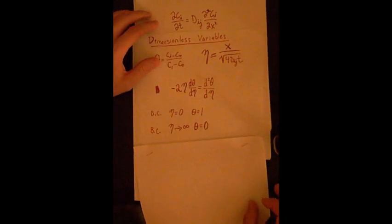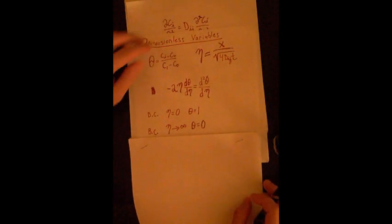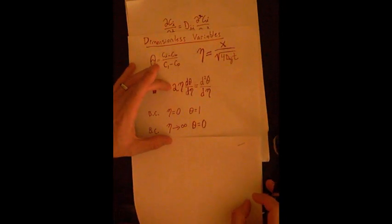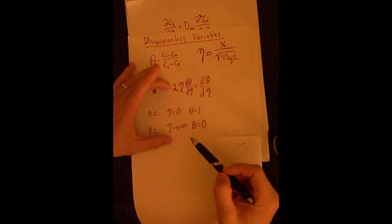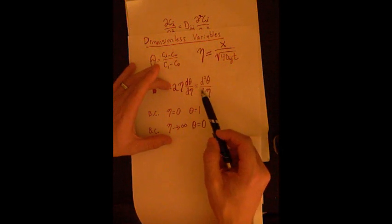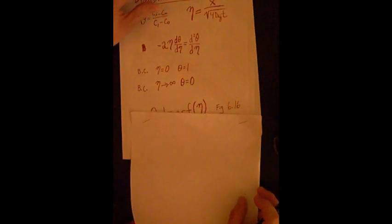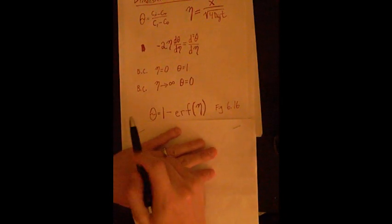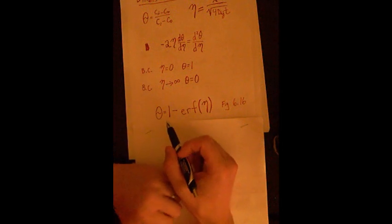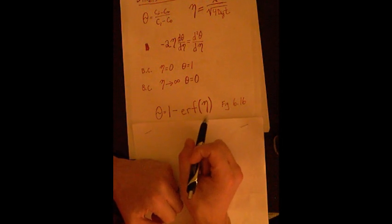So that's our new boundary conditions and governing equation in non-dimensionalized terms. From this, it's an ordinary differential equation, we can use these conditions, we can solve this equation here in terms of theta. And what you get is your non-dimensionalized concentration profile is equal to 1 minus the error function of eta.